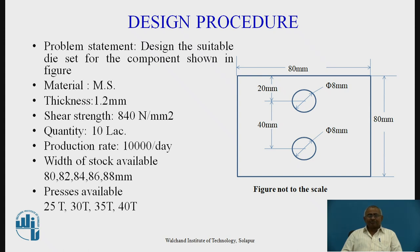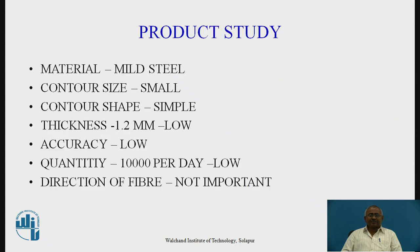The material for this component is mild steel sheet. Thickness of the sheet is 1.2 mm. Shear strength of the sheet is 840 N per mm square. Total quantity required per year is 10 lakh. Production rate stipulated per day is 10,000. Width of stock available is 80 mm, 82 mm, 84 mm, 86 mm, and 88 mm. Presses with spare capacity are 25 ton, 30 ton, 35 ton, and 40 ton, and we have to select the press from these.